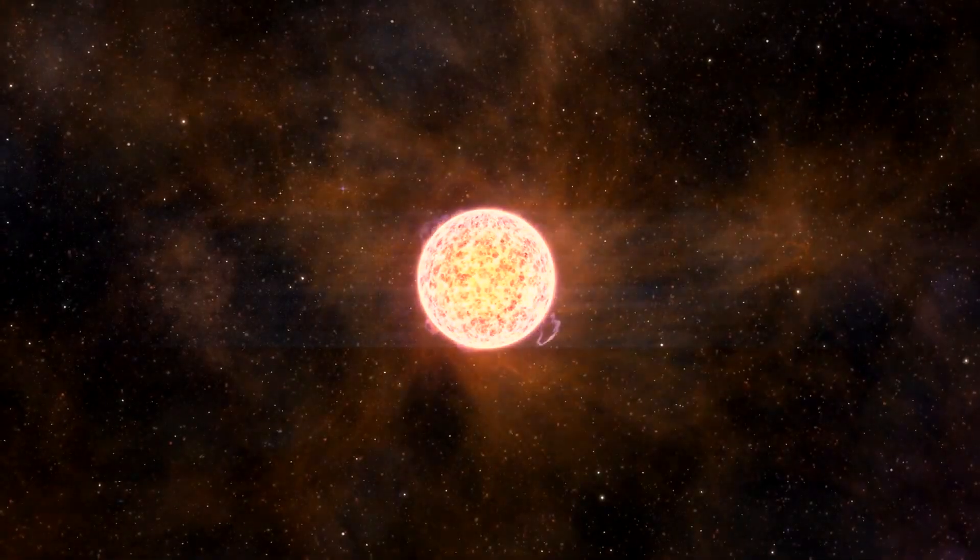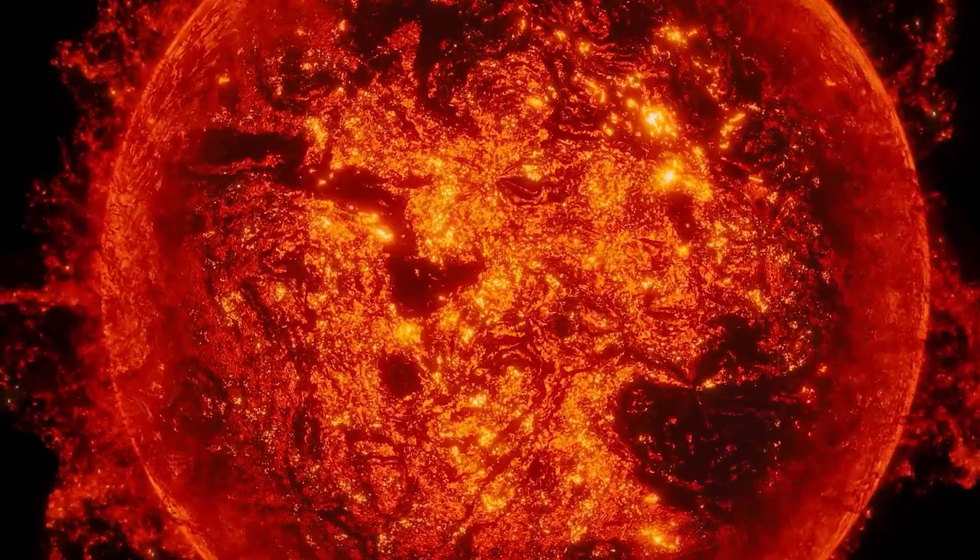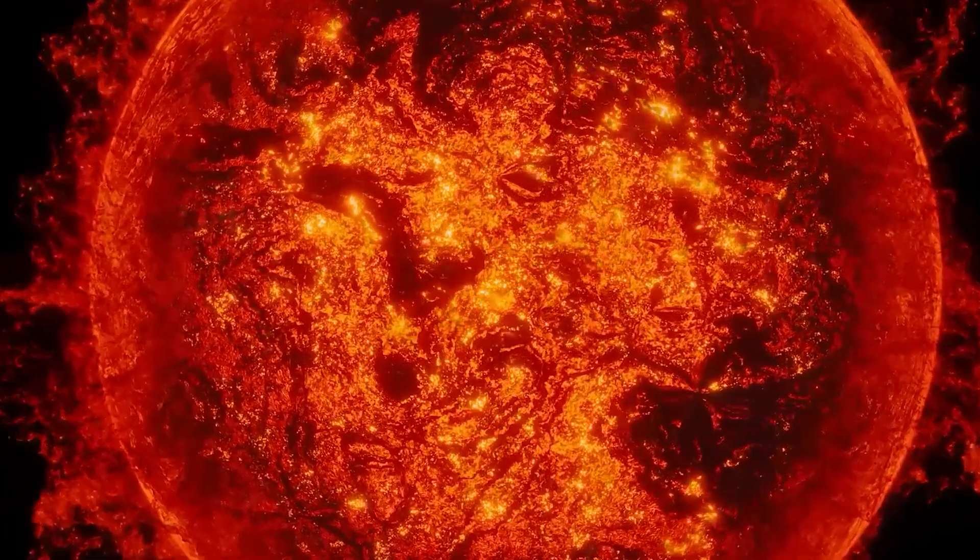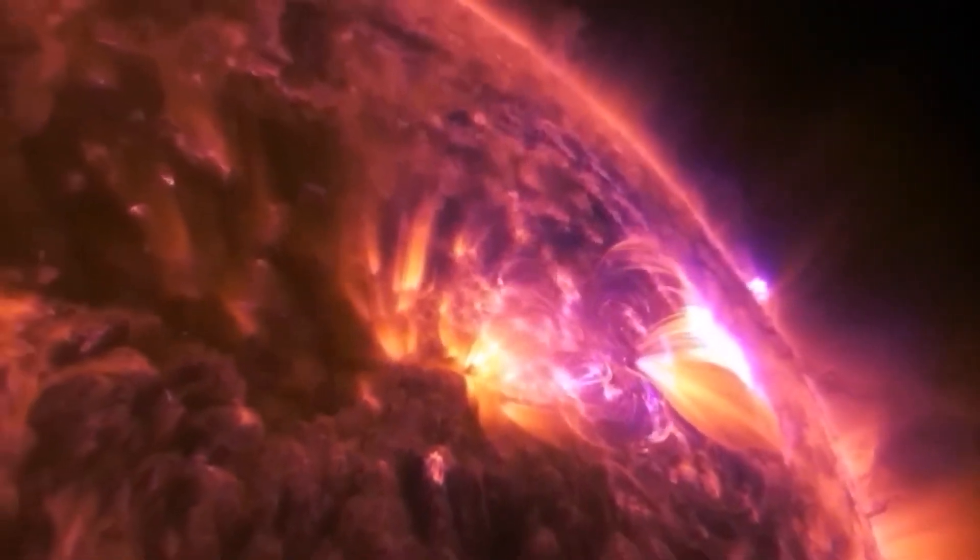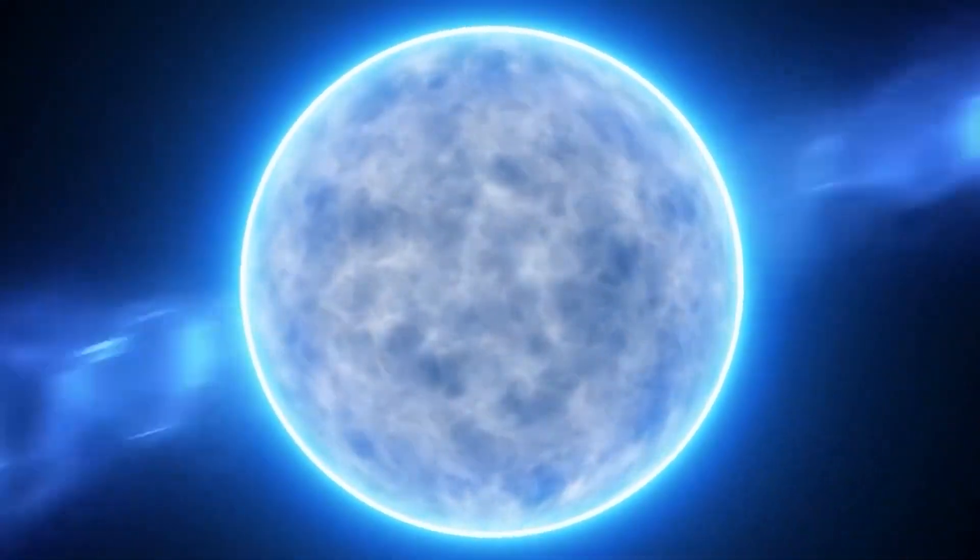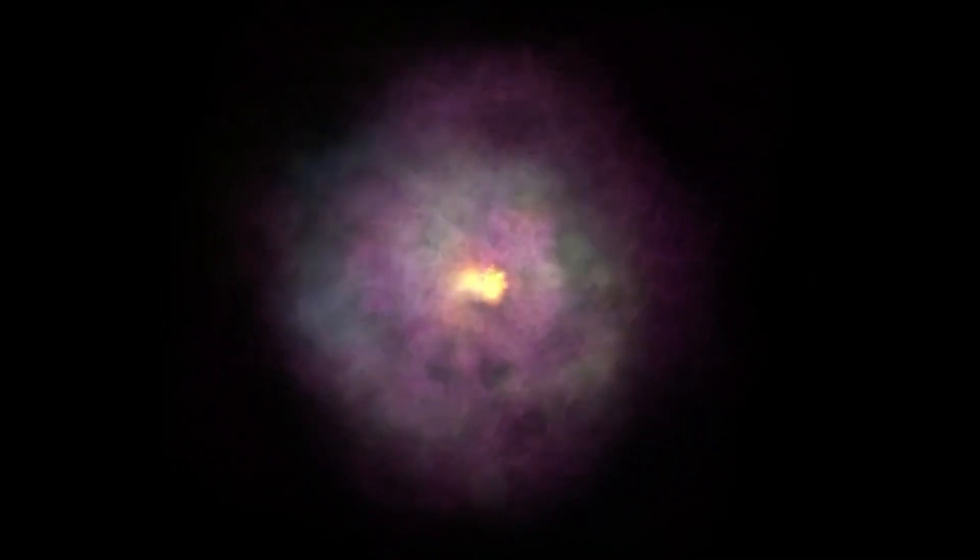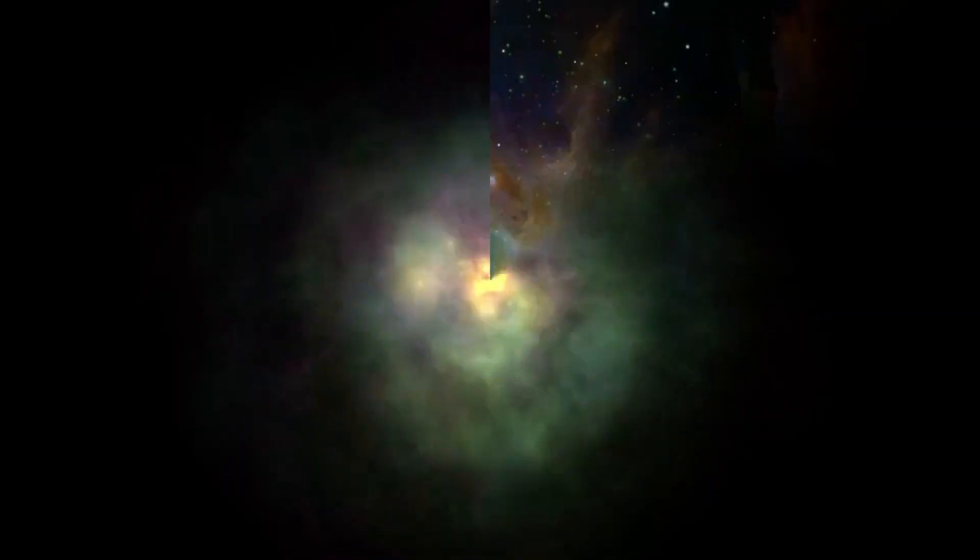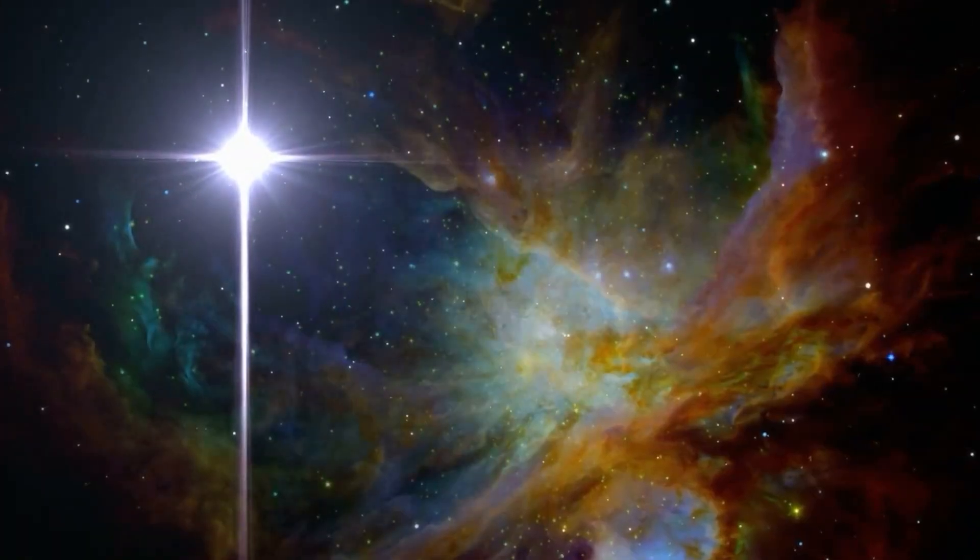Stars undergo an extensive journey through different stages in their evolutionary cycle. When new, these stars have relatively low temperatures and brightness. Subsequently, they advance to the main sequence phase, marked by nuclear fusion, where they remain stable for billions of years.